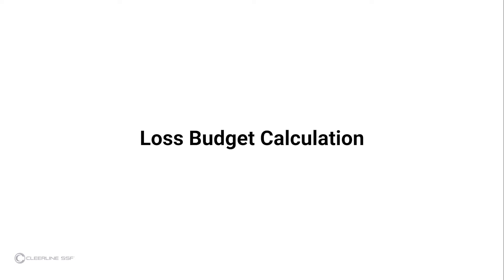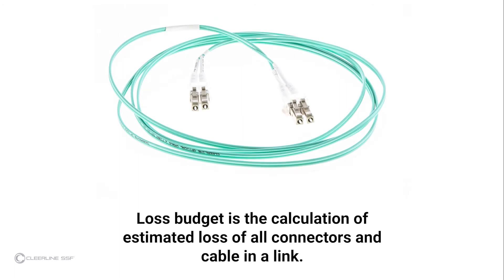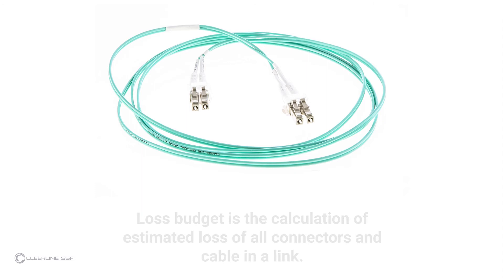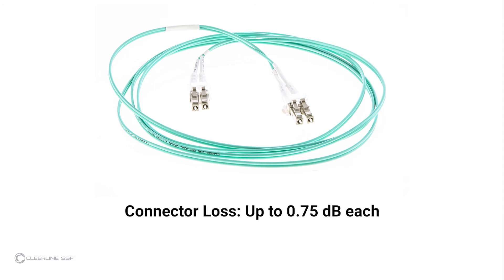Loss budget calculation: Cleerline advocates following established guidelines for insertion loss testing, such as those established by the Fiber Optic Association, and references these FOA standards in both equipment instructions and this video. Loss budget is the calculation of estimated loss of all connectors and cable in a link. Loss budgets can be calculated during design; in testing after installation, the actual loss is compared to the budget to ensure proper installation to industry standard. Each connector under test is allowed up to 0.75 dB per the EIA-TIA 568 standard.